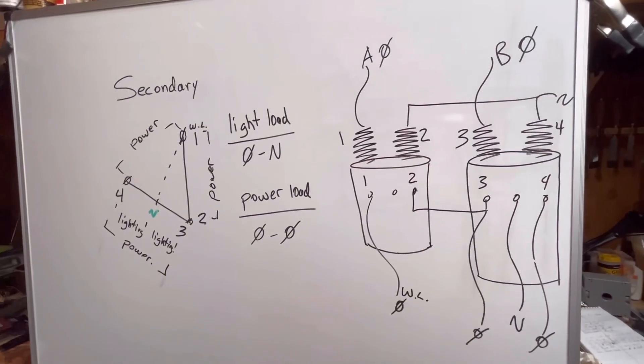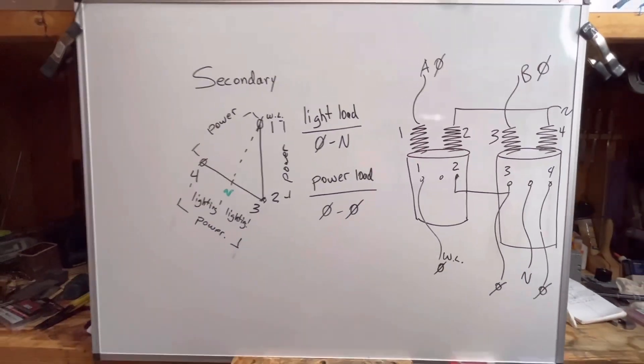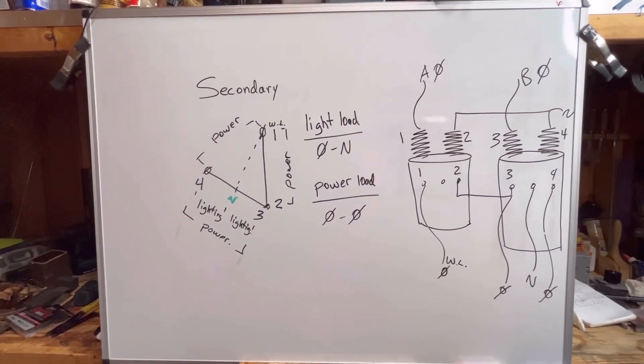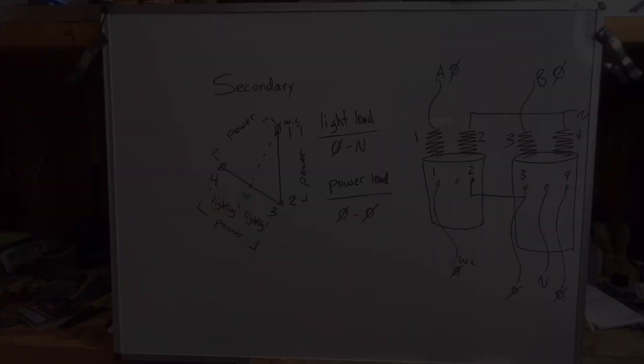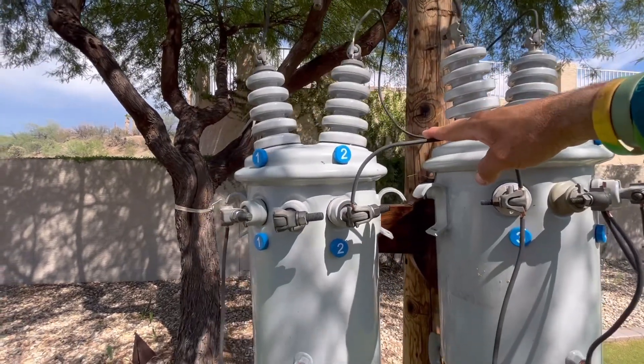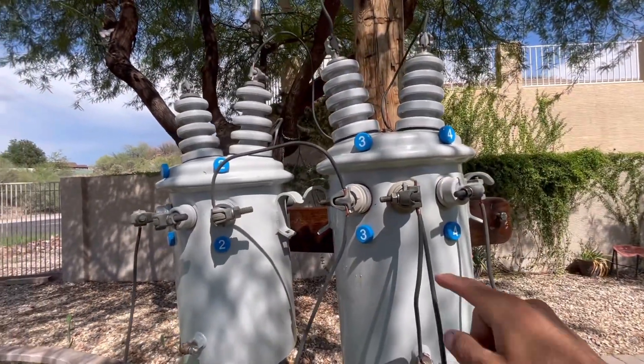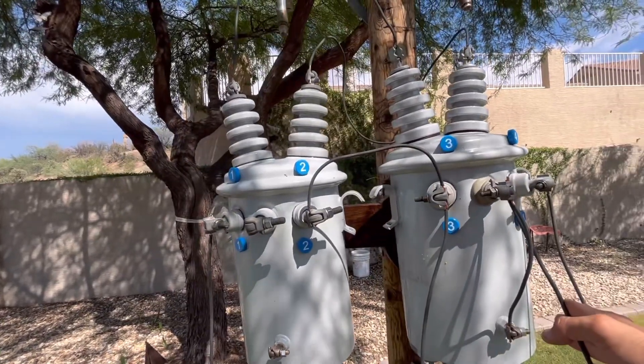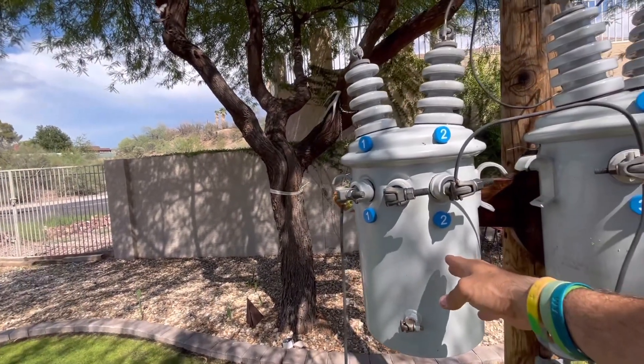So now, let's go outside, let's energize this open bank, and run through the proper procedure of how to load this transformer bank. So here we are. Here's our open bank. I've got my two-to-three tie on my secondary. My neutral is coming off my three-four transformer. So this is my light pot, and this would be my power pot.